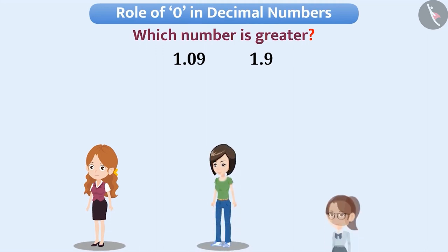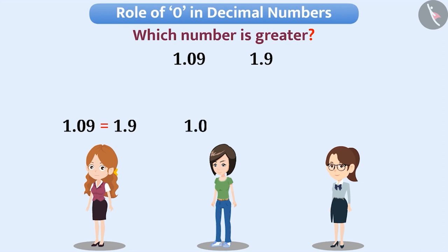Nisha, Meena and Mitali were all well aware of decimal numbers. The teacher asked them to compare 1.09 and 1.9. Here, Nisha thought that both numbers are equal. Meena thought that 1.09 is greater than 1.9 and Mitali thought that 1.9 is greater than 1.09. Can you tell me who was correct? Think for a while.